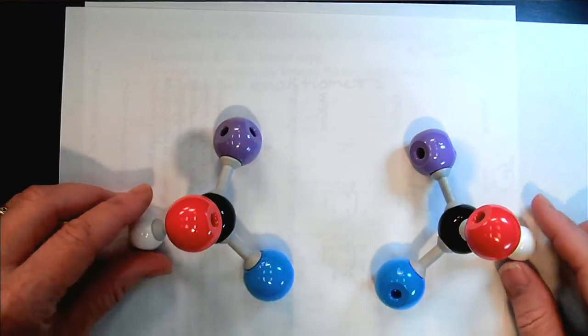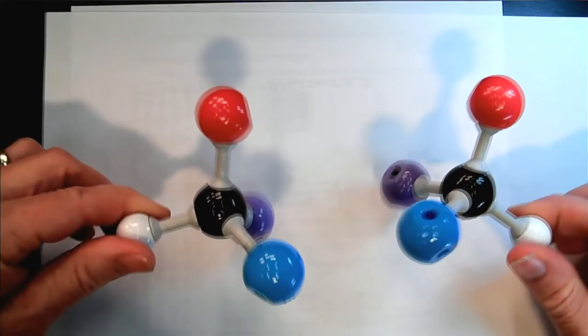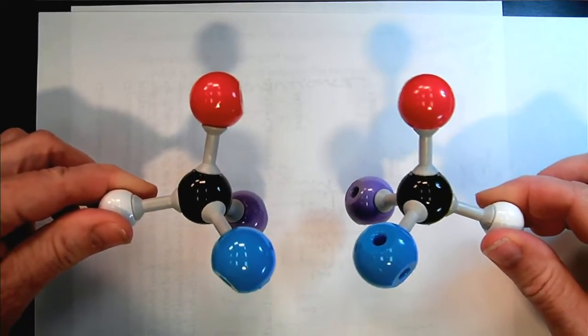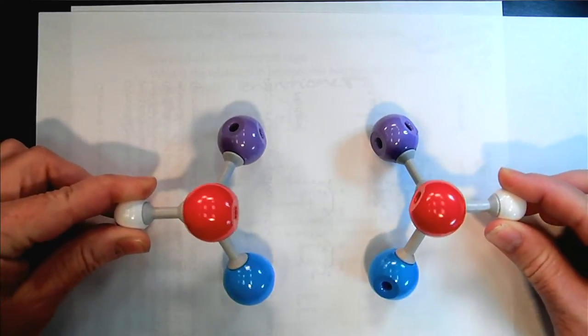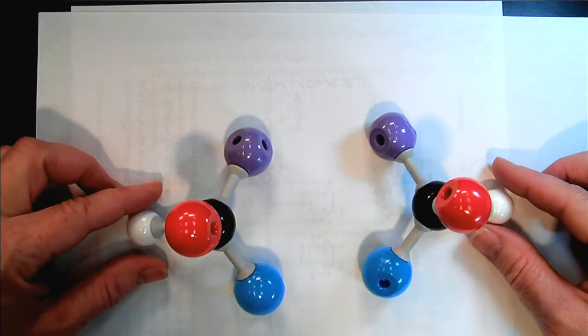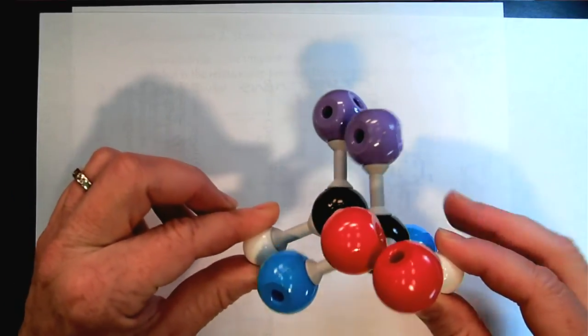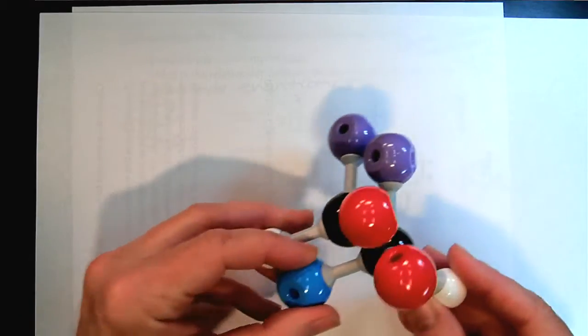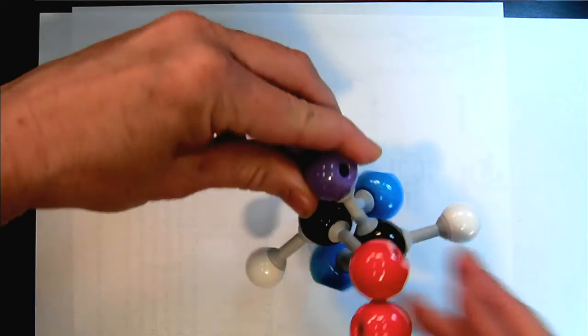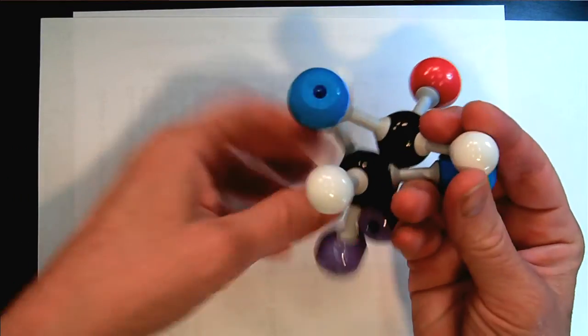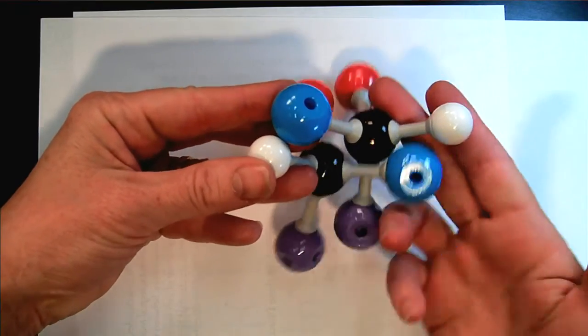So if we look at these, we can see, if we look from the side, that we have the mirror, they're mirror images of each other. However, they're non-superimposable. If I try to overlap, I can get the purple and the reds to overlap, but then notice that the blues and the whites don't match.